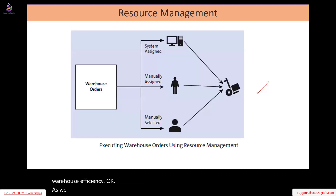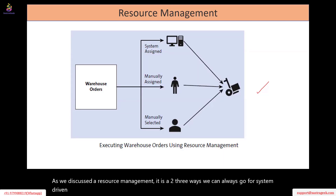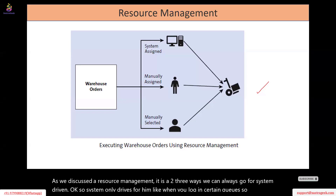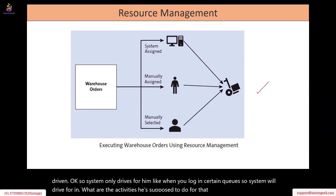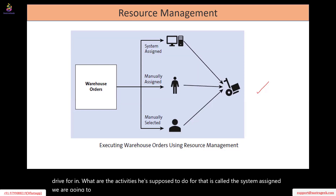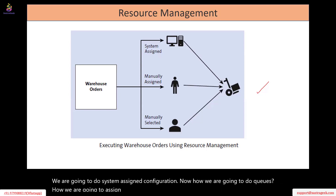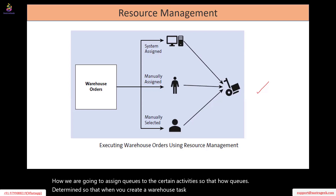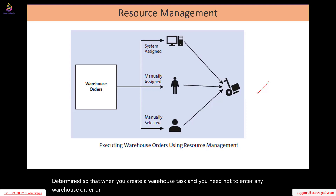As we discussed, resource management — there are two or three ways we can go for system driven. So the system only drives for him. When you log in certain queues, the system will drive for him what activities he's supposed to do — that is called system assigned. We are going to do system assigned configuration now: how we are going to do queues, how we are going to assign queues to certain activities, so that how queues are determined. When you create a warehouse task and enter the queues, automatically it drives for him what activities he has to perform.